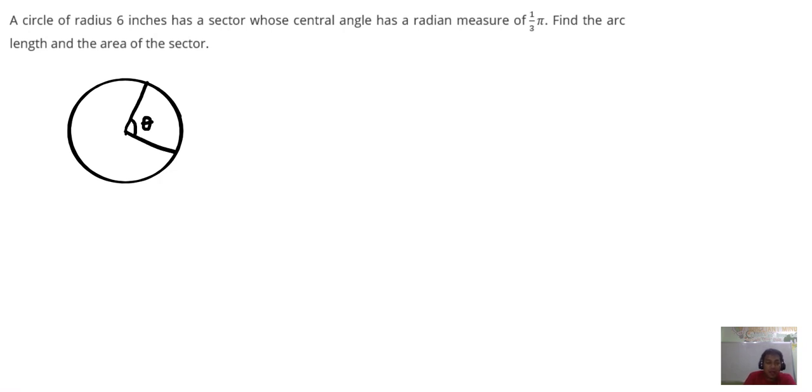The length of the arc intercepted by these two radii, we call it S. So this is the distance from this point - let us color this one blue - from this point up to this point. That distance is the arc length.